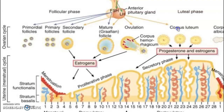In response to LH, the corpus luteum starts releasing hormones — progesterone and estrogen, with progesterone being most significant. This progesterone acts on the uterine wall during the secretory phase.